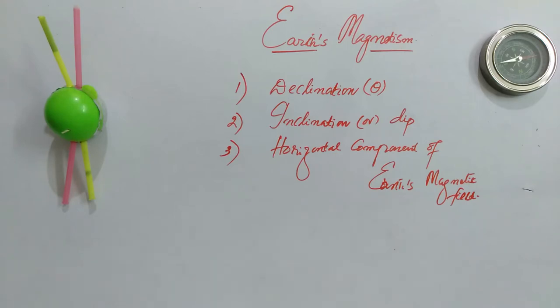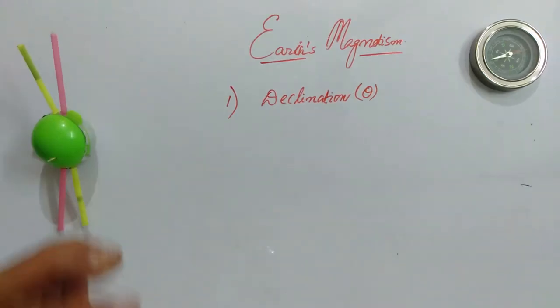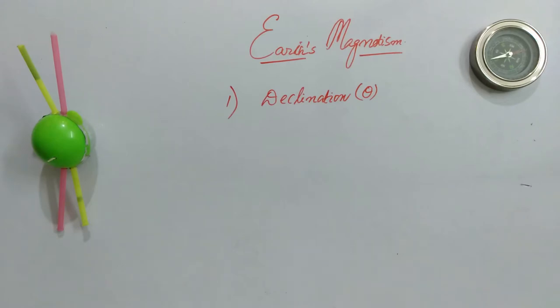First, let's talk about declination. To understand declination, you must first know some terms related to Earth's magnetism.